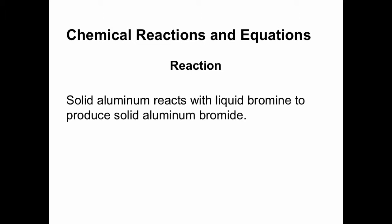Here's a reaction: solid aluminum reacts with liquid bromine to produce solid aluminum bromide. We're going to take this sentence and translate it through a couple of steps into a balanced chemical equation. This sentence is how we read every single equation we do after this — when we get to the end, you would read the balanced equation exactly the same way you would read this sentence.